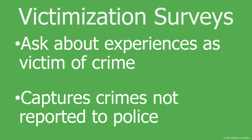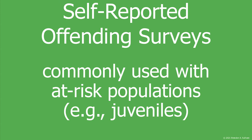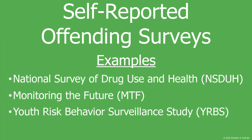Despite these limitations, the NCVS provides a wealth of tremendous information and a necessary contrast with crimes reported to the police. Self-reported offending surveys are similar to victim surveys, except individuals are asked about crimes they themselves have committed. These surveys measure the frequency and type of offending behaviors unlikely to be reported to police or that don't have clearly identifiable victims, such as personal drug use. These surveys are commonly used with at-risk populations, such as juveniles, allowing us to get information directly from potential offenders and track specific types of offending behaviors over a long period of time. Examples include the National Survey of Drug Use and Health, the Monitoring the Future Survey, and the Youth Risk Behavior Surveillance Study.